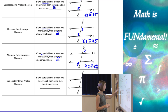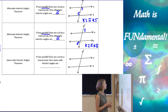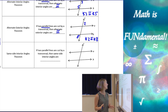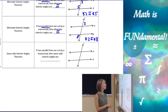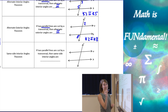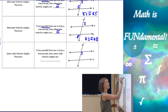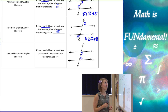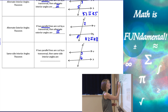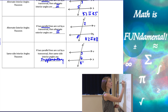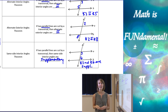Last is the Same Side Interior Angles Theorem — also called the Consecutive Angles Theorem. It states that if two parallel lines are cut by a transversal, then same side interior angles are supplementary. For example, angle three and angle six: angle three is obtuse and angle six is acute, so they're probably not congruent. Instead, angle three and angle six are supplementary.